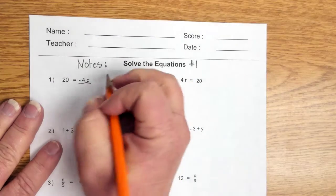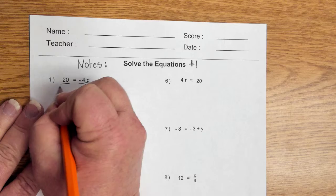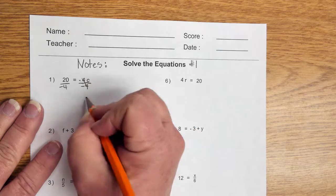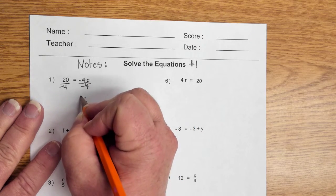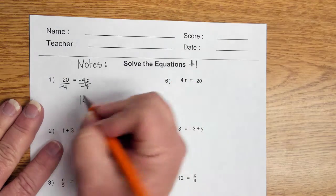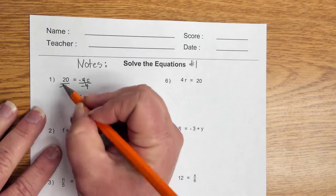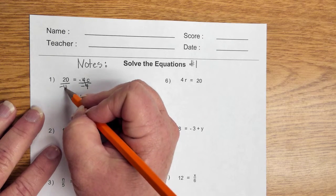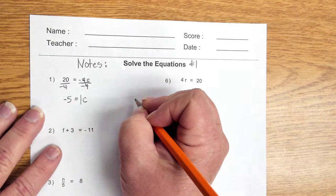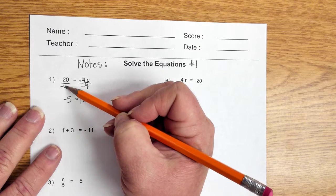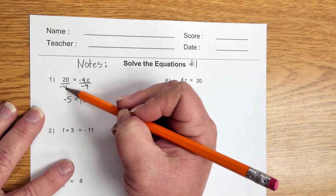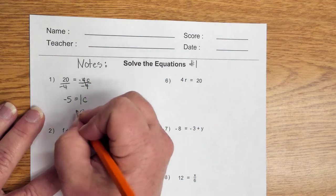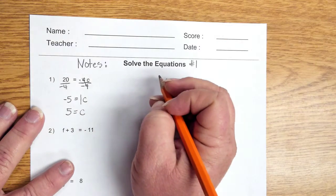So, all I have to do is come along here and divide both sides by negative 4. Negative 4 divided by negative 4 gives you a positive 1, so you end up with 1c. And we generally don't write the 1. We leave it off, but I'll just write it there for the moment. And 20 divided by negative 4, when you have a positive divided by a negative, you end up with a negative, so you end up with negative 5. So, in algebra land, you would write this as negative 5 is equal to c.